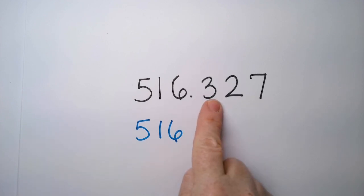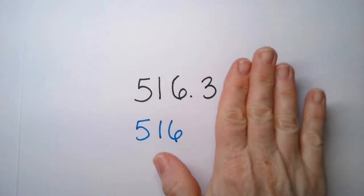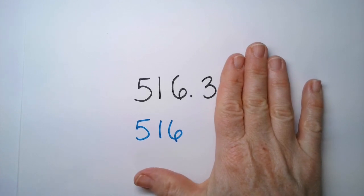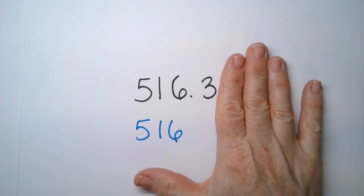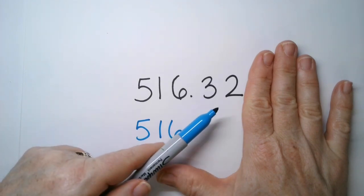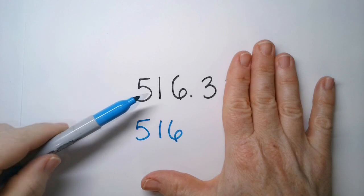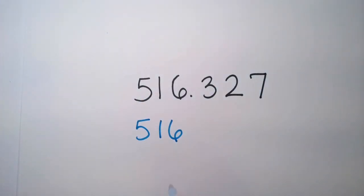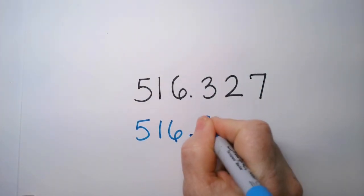What if I want to round this to the nearest tenth? So then I cover everything up beyond the tenths, and then I peek at what's next to the tenths, and it's a two. The two is less than five, so I'm going to round down. So to round this number to the nearest tenths, it's actually 516.3.